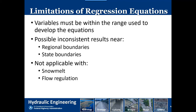Remember that these equations are not good for snow melt — you don't have to worry about that much here, it's usually in the mountains. And for flow regulation: if you have a dam upstream, you cannot use the equation. If you have irrigation lines coming off upstream of your point of interest, you cannot use this equation. They don't take those factors into account.